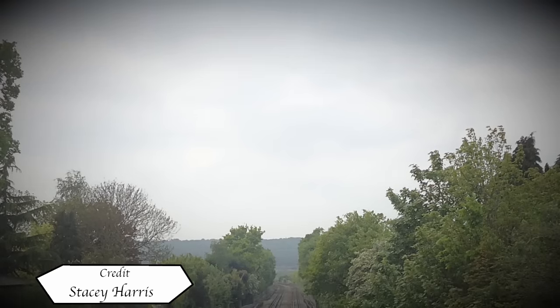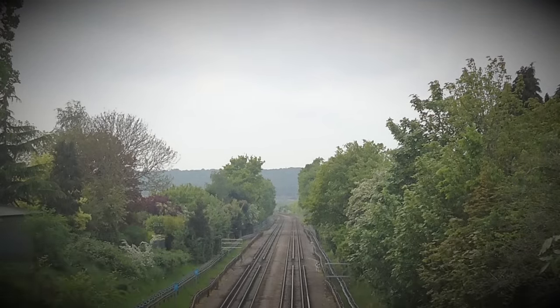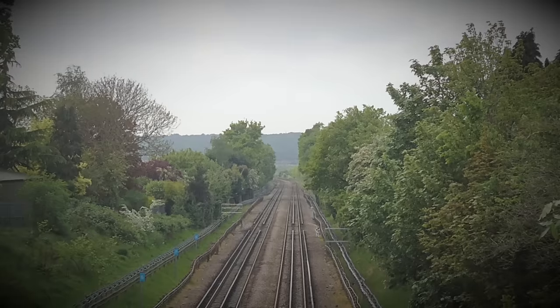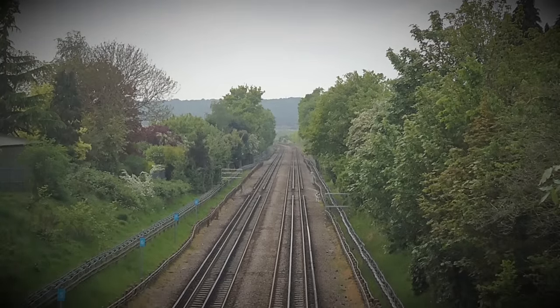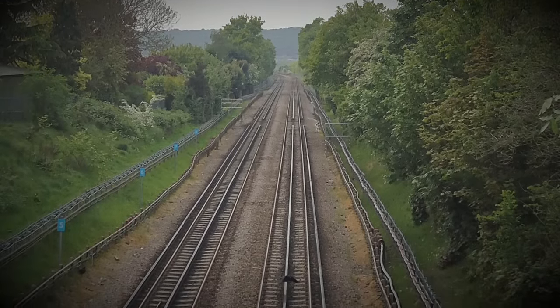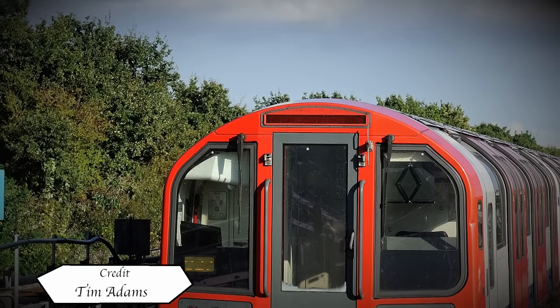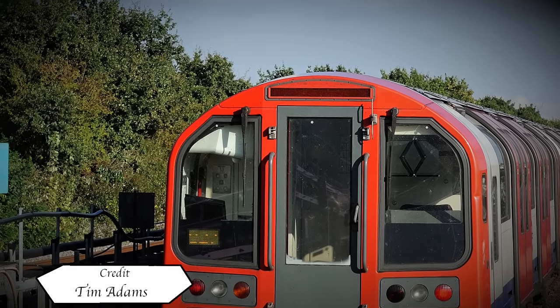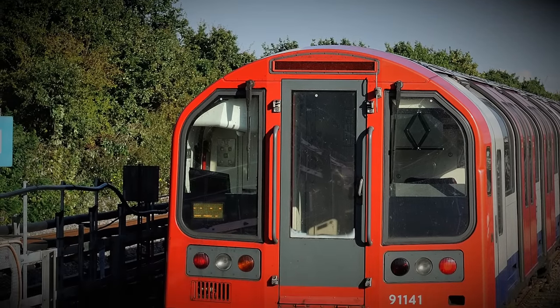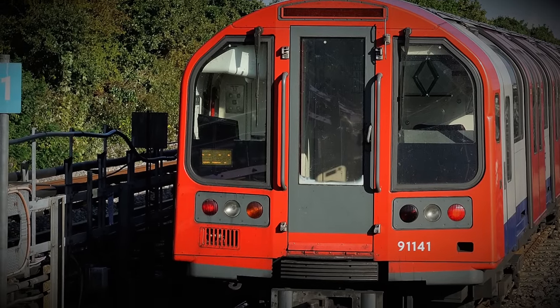Okay, so if I had to pick the underground line that I used the least, it would hands down be the central. Us South Londoners would turn to ash if we went too far northeast. It's a shame, as I find the current version of the central line pretty interesting, with its automatic train operation based on fixed block signalling principles, the fact it uses kilometres per hour instead of miles per hour, and that it also goes really far out into the countryside.